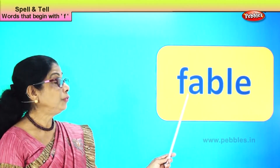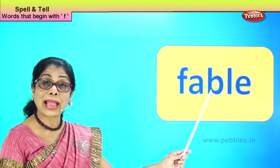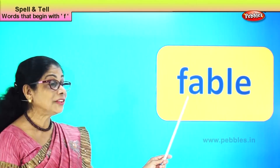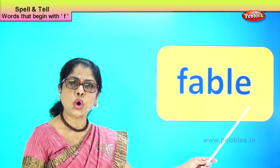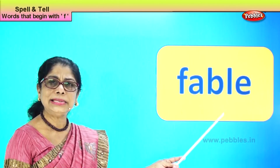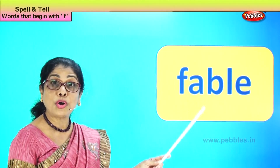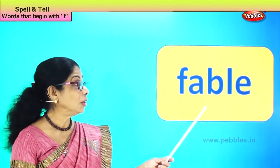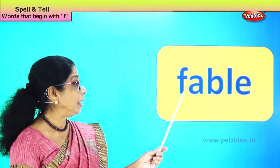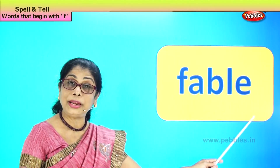If you take the story of Goldilocks and the three bears, that's a fable. The moral behind it is: do not enter somebody's house and eat and do what you want there. That is the moral of the fable. Spell fable: F-A-B-L-E.